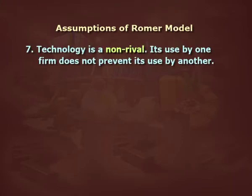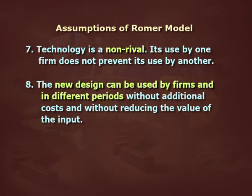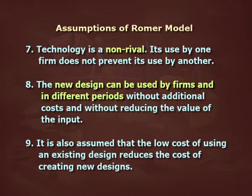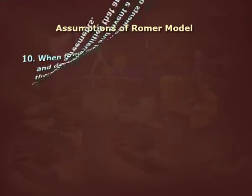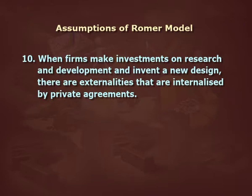When there is partial excludability, investment in R&D leading to an invention can only bring quasi-rent to a firm. Seventh, technology is non-rival — use by one firm does not prevent use by another. Eighth, a new design can be used across firms and time periods without additional costs or reduction in input value. Ninth, the low cost of using an existing design reduces the cost of creating new designs. Lastly, when firms invest in R&D and invent a new design, there are externalities that are internalized by private agreements.